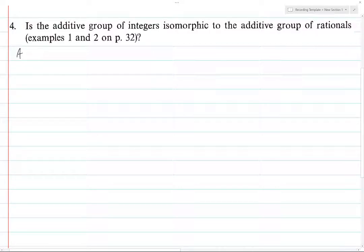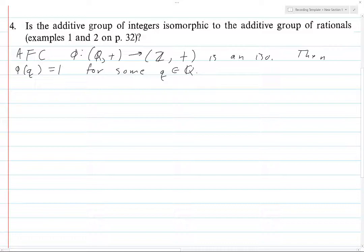So let's assume for contradiction that φ from (Q,+) to (Z,+) is an isomorphism. Then it's bijective, so φ(q) = 1 for some q in Q. Then we have q/2, and q/2 exists in the rationals.